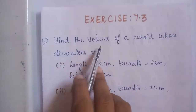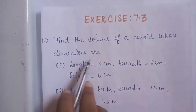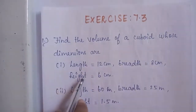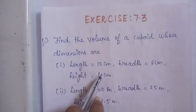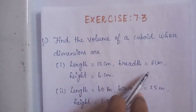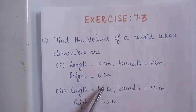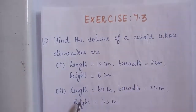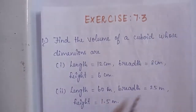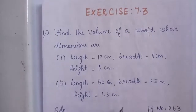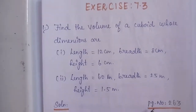Problem No. 1: Find the value of a cuboid whose dimensions are — First subdivision: length is equal to 12 cm, breadth is equal to 8 cm, height is equal to 6 cm. Second subdivision: length is equal to 60 m, breadth is equal to 25 m, height is equal to 1.5 m. The problem belongs to page No. 263. So let us see the solution.